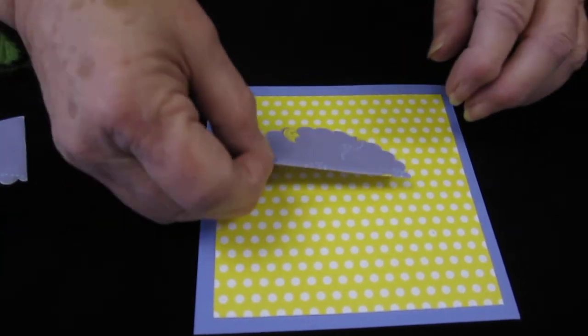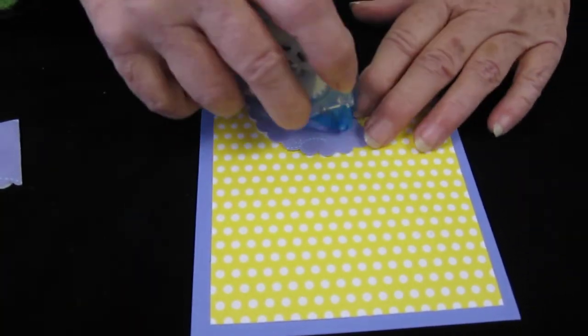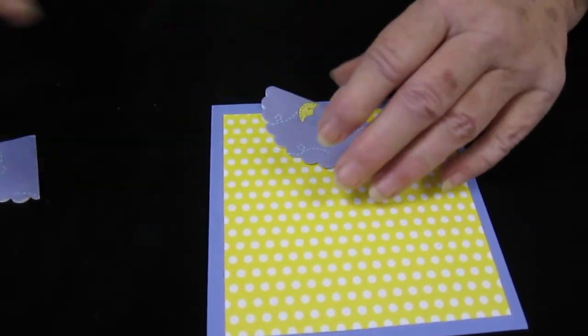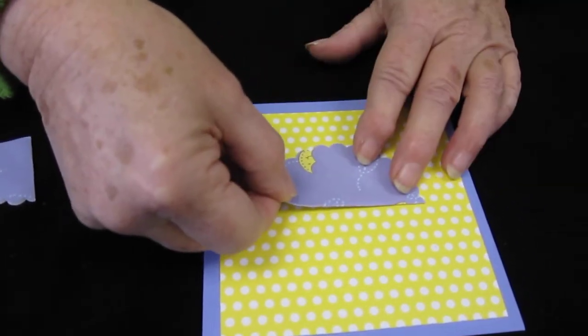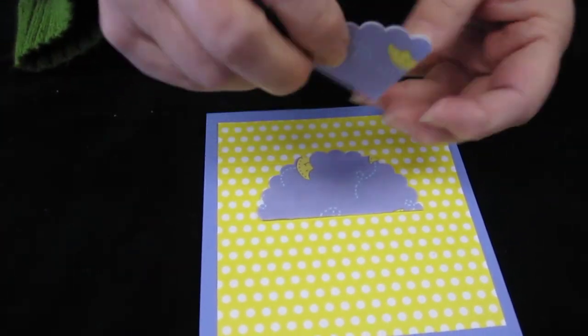So now we are going to take our base of our buggy, tape it down onto our card, and then we are going to take our next one,